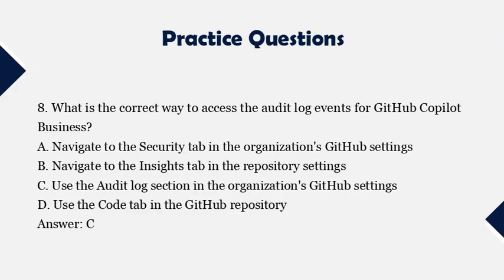Question 8: What is the correct way to access the audit log events for GitHub Copilot Business? A. Navigate to the security tab in the organization's GitHub settings. B. Navigate to the insights tab in the repository settings. C. Use the audit log section in the organization's GitHub settings. D. Use the code tab in the GitHub repository. Answer: C.